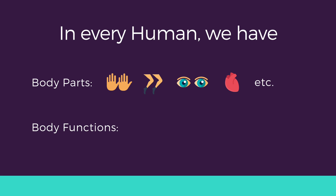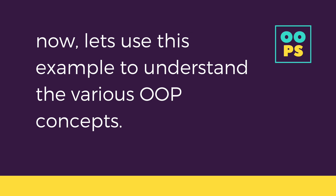Also, all human beings walk, eat, see, talk, hear, etc. Both male and female perform some common functions, but there are some specifics to each which are generally not valid for the other. For example, a female can give birth while a male cannot. Human anatomy is interesting, isn't it? But let's see how all this is related to OOP.